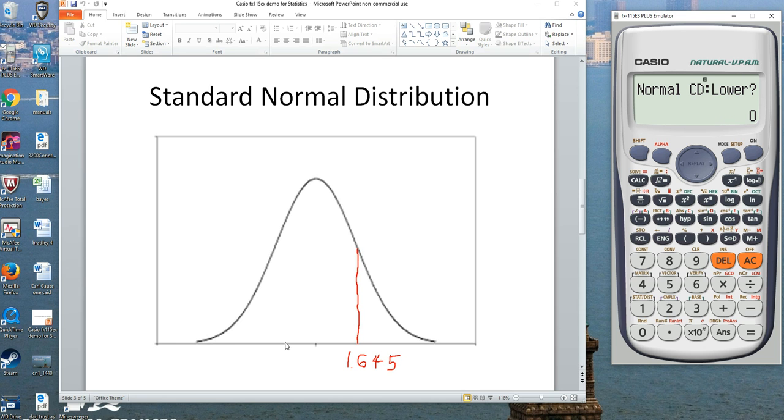Your lower is really negative infinity. To say negative infinity, why don't we just say negative 9, 9, 9, 9. That's good enough. So you're getting all the area to the left here. And your upper limit is 1.645.